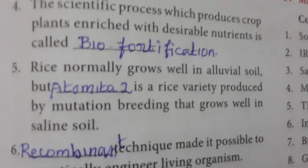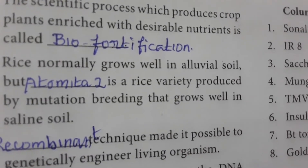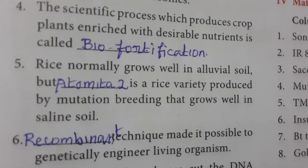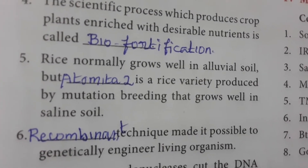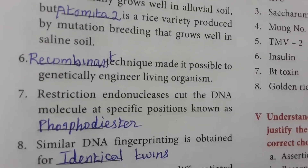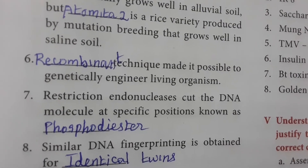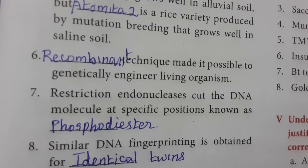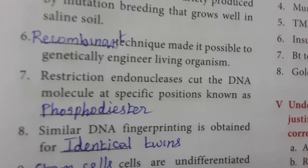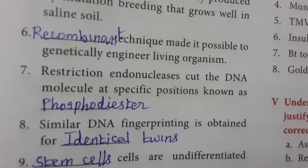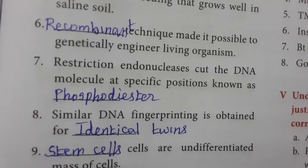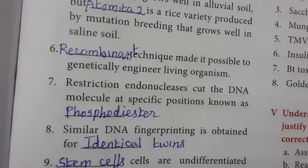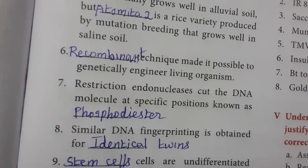Rice normally grows well in alluvial soil, but Atomita 2 is a rice variety produced by mutation breeding that grows well in saline soil. Recombinant DNA technique made it possible to genetically engineer living organisms — genetically modified organisms are produced using recombinant technology. Restriction endonucleases cut the DNA molecule at specific positions known as phosphodiester bonds.